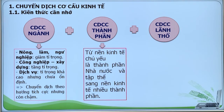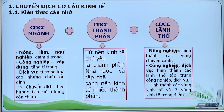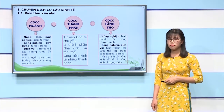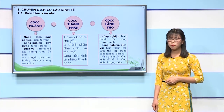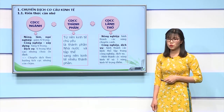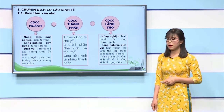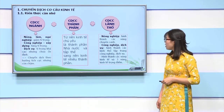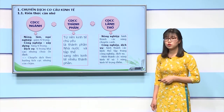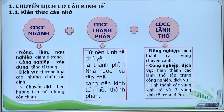Về chuyển dịch cơ cấu thành phần, từ nền kinh tế chủ yếu là thành phần nhà nước và tập thể sang nền kinh tế nhiều thành phần. Về chuyển dịch cơ cấu lãnh thổ, trong nông nghiệp nước ta hình thành các vùng chuyên canh nông nghiệp như vùng chuyên canh cây công nghiệp, vùng chuyên canh về sản xuất lương thực thực phẩm. Trong công nghiệp và dịch vụ, nước ta hình thành các lãnh thổ tập trung công nghiệp dịch vụ như các khu công nghiệp, khu chế xuất.